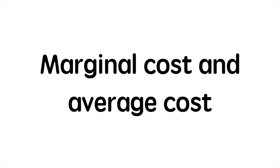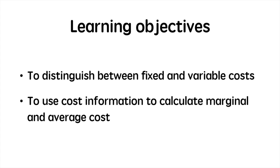In this video we're going to focus on the concepts of marginal and average cost. In order to do so we need to first distinguish between fixed and variable costs. Once we've done that we'll use cost information to calculate the marginal and average cost.